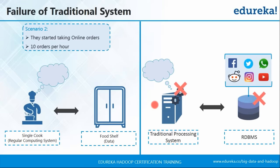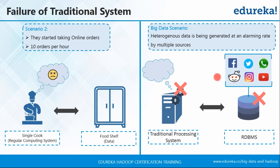Now let's talk about a different day. Bob decided to take online orders, and now they are receiving much more orders than expected. From two orders per hour, the orders have risen to 10 orders per hour, and now he has to cook 10 dishes every hour. This is a bad situation for the cook because he was only doing two dishes per hour before. Similarly, consider our traditional processing system — there are a huge number and huge variety of data being generated at an alarming rate. The velocity is really high, they are all unstructured, and our traditional processing system is not capable of handling that. So what should be the solution?